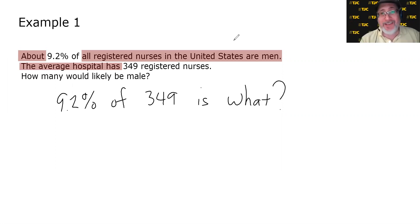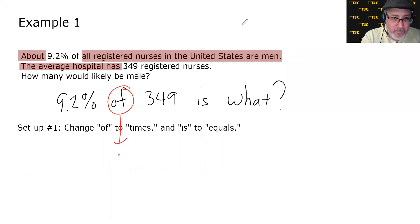Now, by stripping it down, I'm taking out the context, but it made the problem a lot easier to digest. Now, we currently have two ways to handle this. We can use setup number one or setup number two. If we use setup number one, we're going to change of to times and is to equals. Let's see what that would look like. Of becomes times. Is becomes equals.